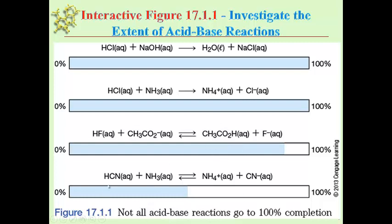The opposite case: we have HCN and NH3. On the other side, we have NH4+ and CN−. We can compare the Ka of HCN and NH4+, and we'll find that they're very close to one another. So this equilibrium is going to be near midway at the end of the reaction.